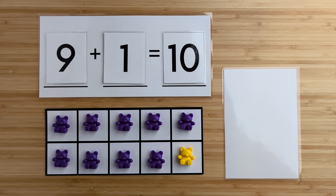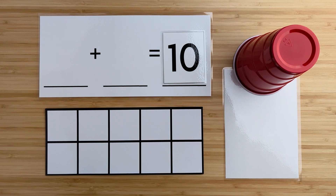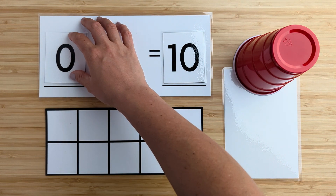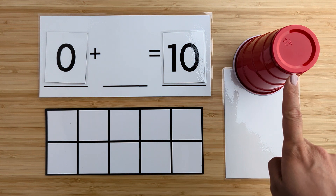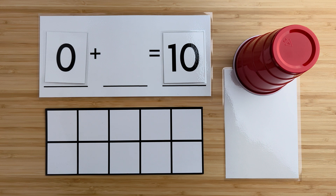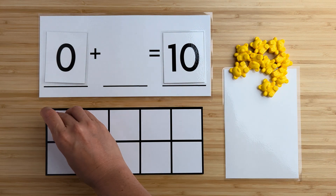Nice job. Let's try another one. Let's count how... wait a second. There are no bears there. There are zero bears so far. Can you guess how many bears are hiding under the cup? Let's find out. One,